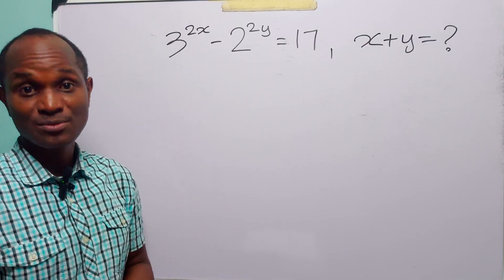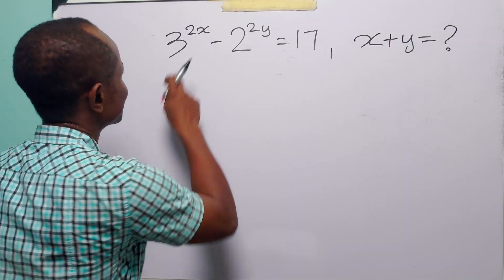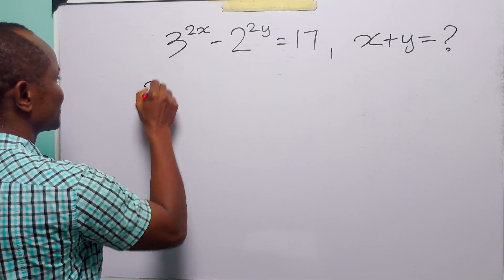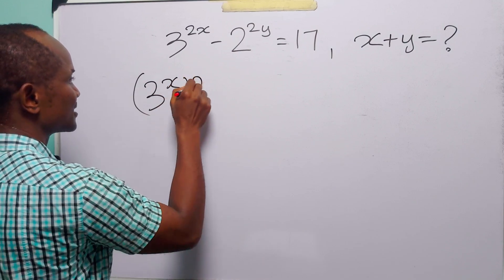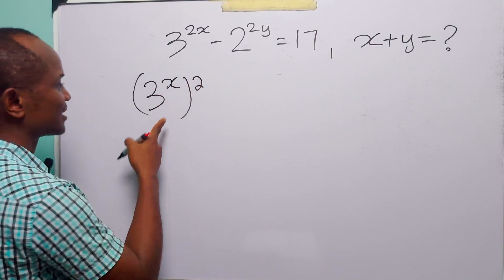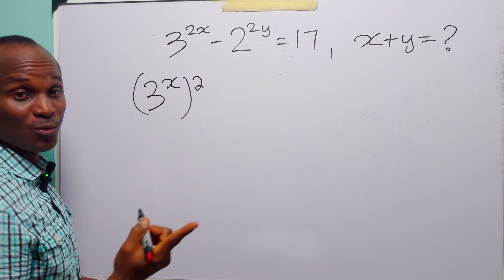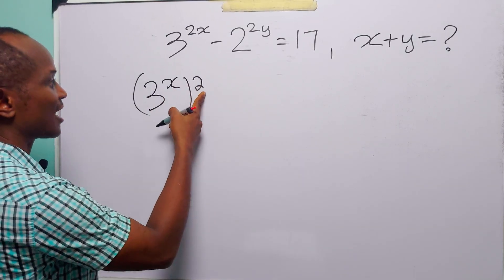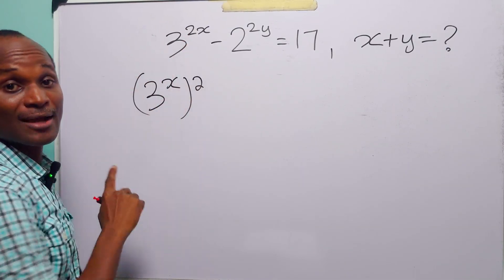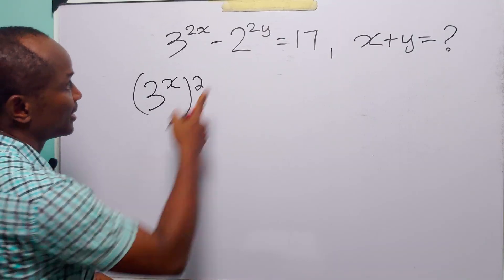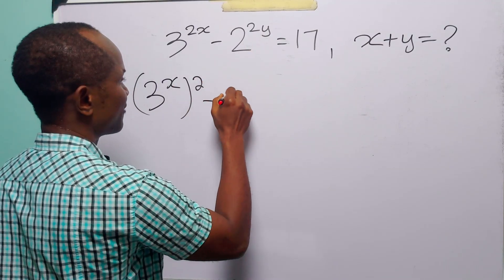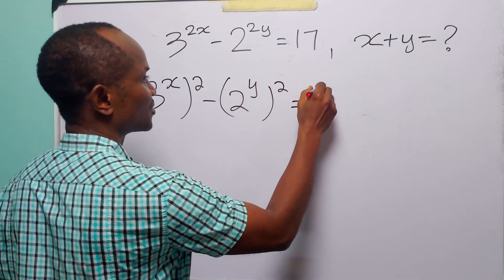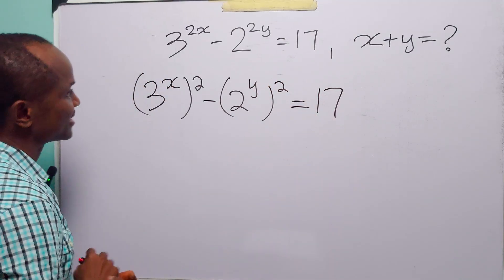To solve this problem, let us start by expressing 3 to the power 2x as (3 to the power x) squared. To remove the bracket we multiply the two powers: 2 times x equals 2x. We do the same thing for the other term, giving us (2 to the power y) squared, and of course this is equal to 17.